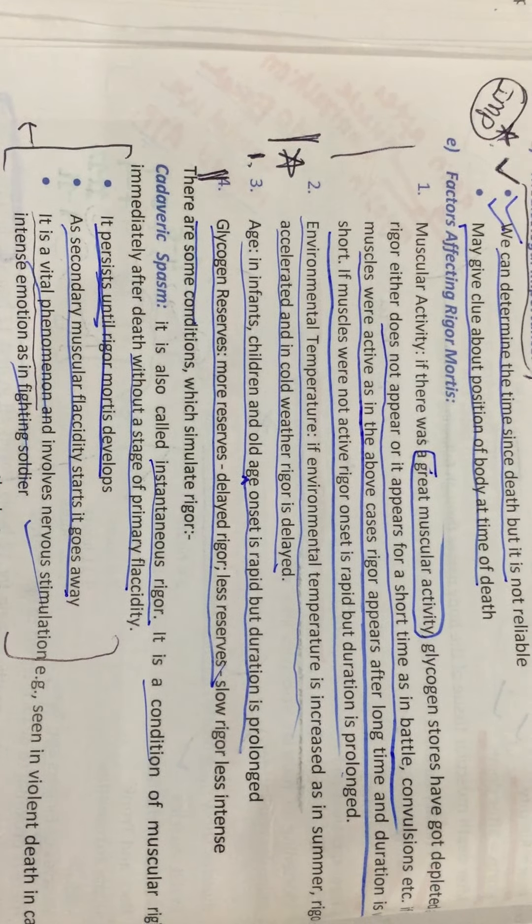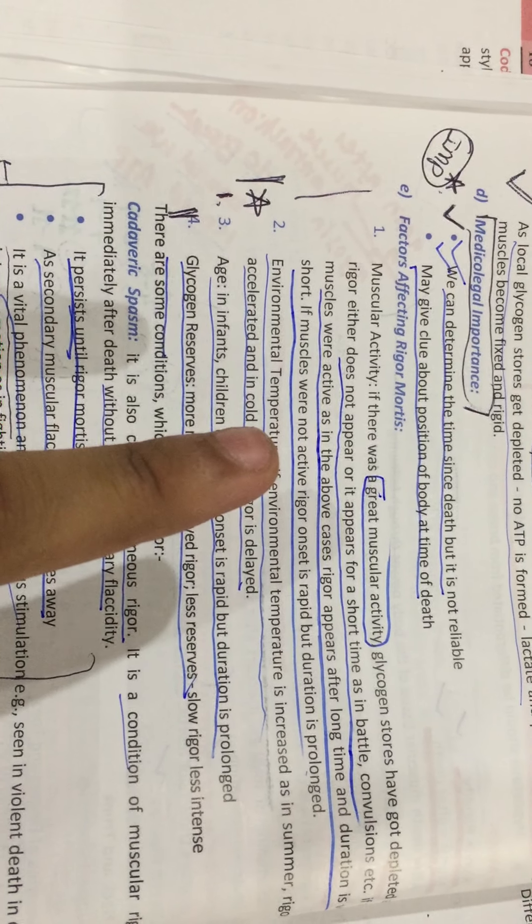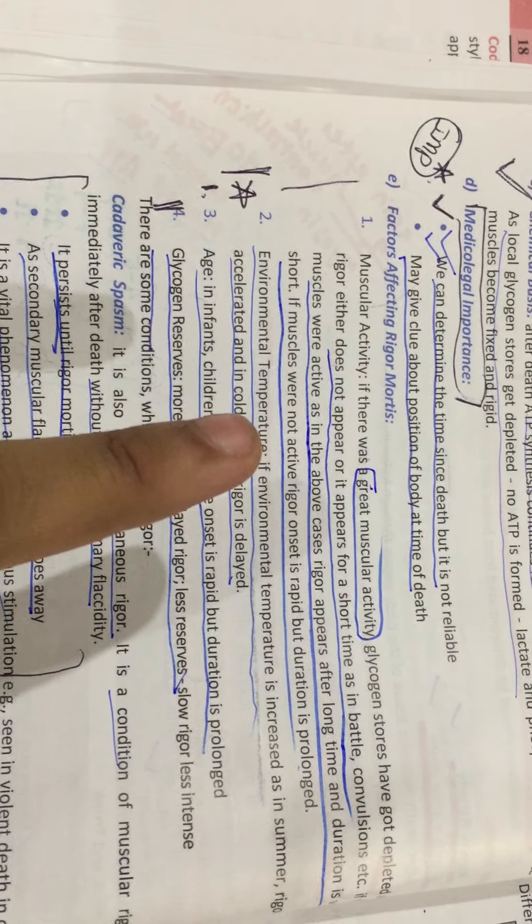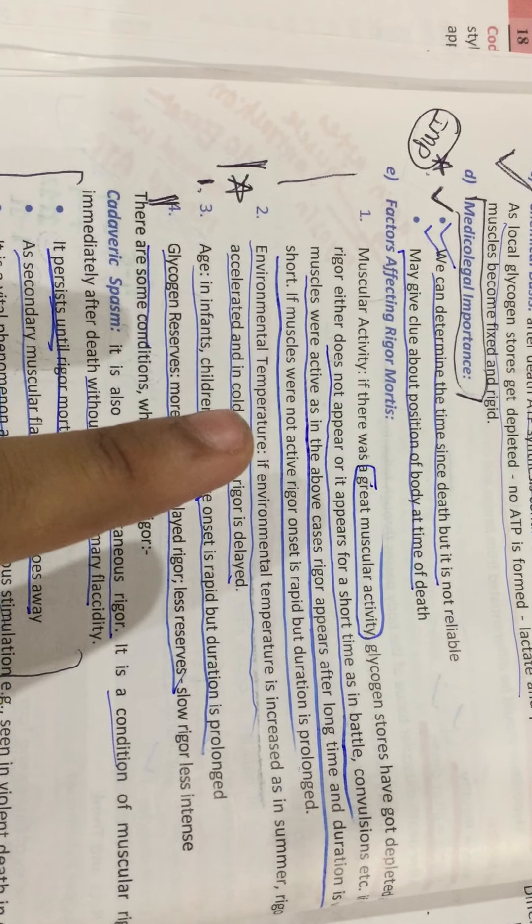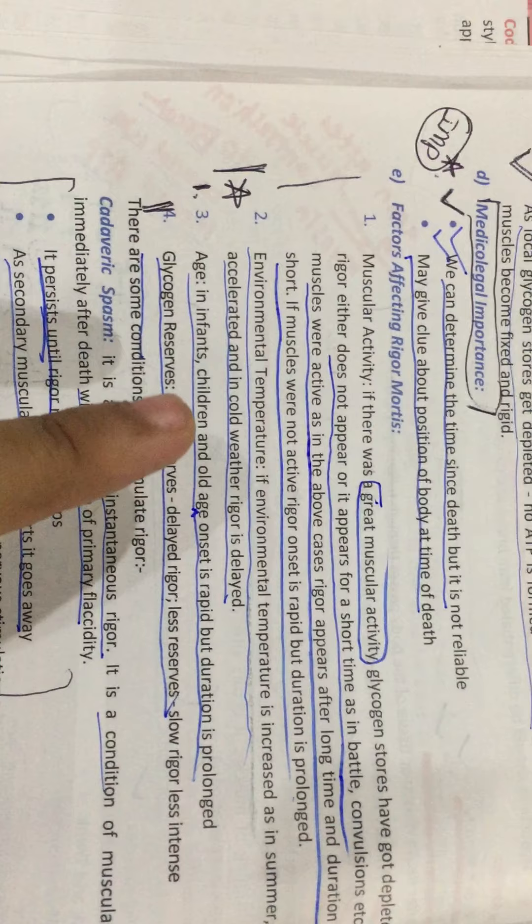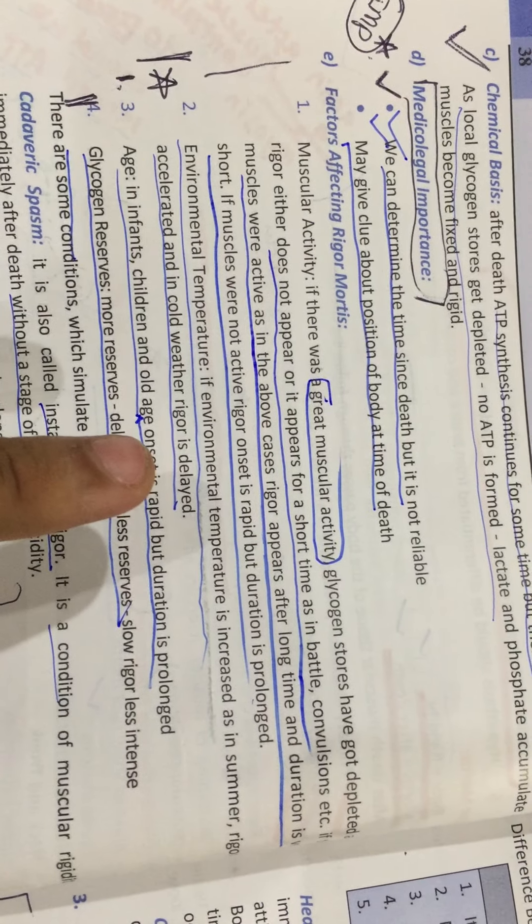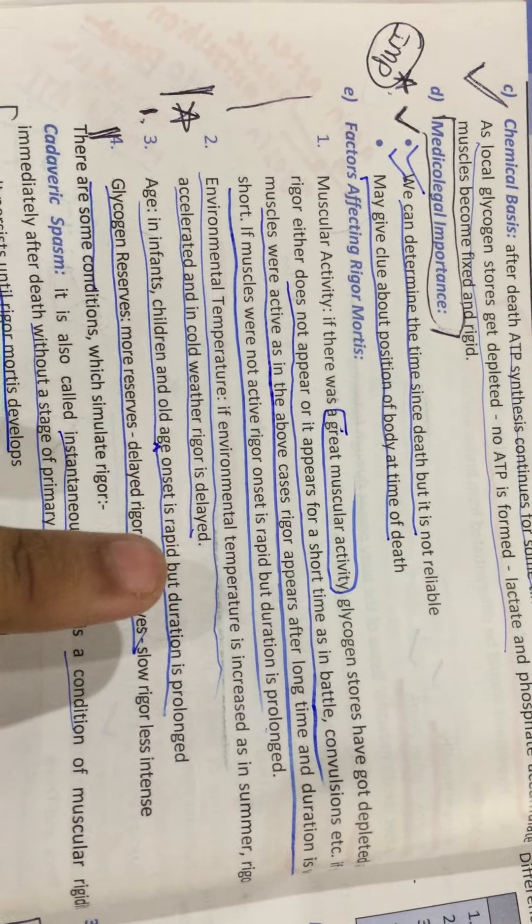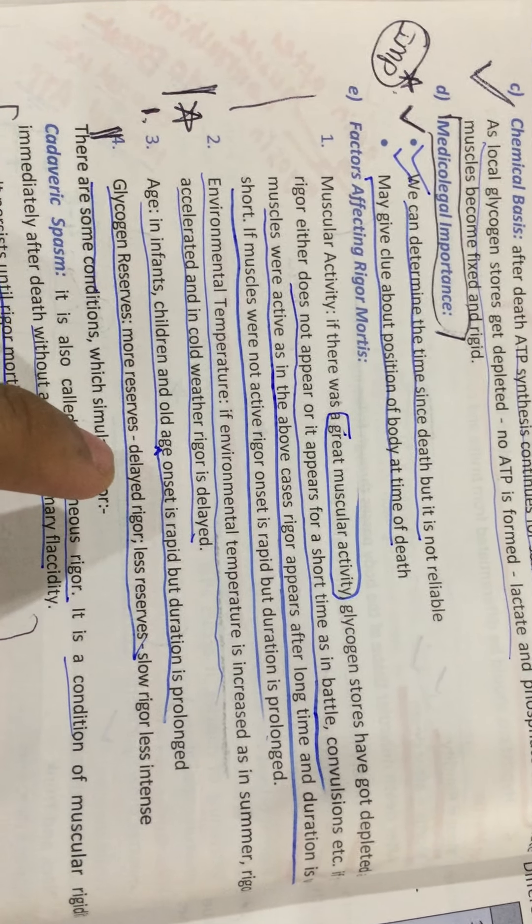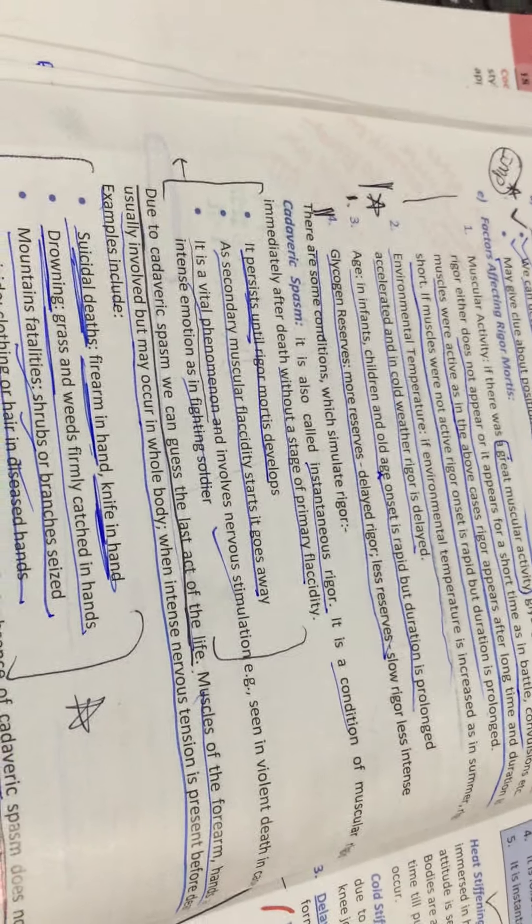Factors affecting rigor mortis are four things. First of all, muscle activity when the person is dying - if it was very much, ATP is already depleted, so rigor mortis will start early. If it was weak muscular activity, rigor mortis will start late. Second, environmental temperature - heat causes rigor mortis to start early, cold causes late start. Third, children versus adults - children start early. Fourth, glycogen level - if it is more, glycogen reserves will cause late start, because glycogen is going to breakdown and ATP is going to be produced through aerobic respiration.